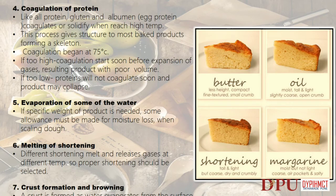Coagulation of protein: like all proteins, gluten and albumin (egg protein) coagulate or solidify when they reach high temperature. This process gives structure to most baked products, forming a skeleton. Coagulation begins at 75 degrees Celsius. If too high, coagulation starts too soon before expansion of gases, resulting in a product with poor volume. If too low, proteins will not coagulate soon enough and the product may collapse.